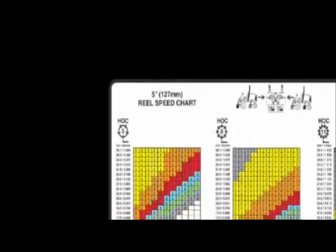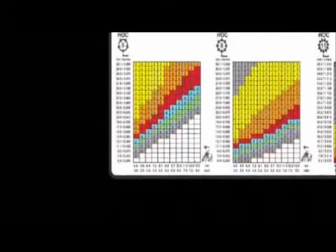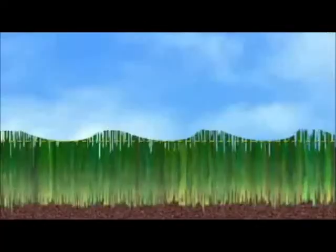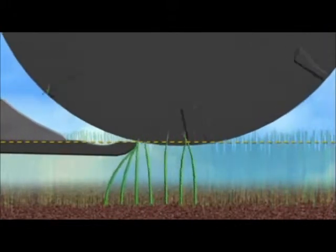Toro's reel speed control system was engineered to simplify this setup process to give you the optimum after cut appearance for your turf and greatly reduce the risk of damage due to incorrect settings or operator error.